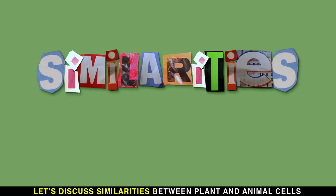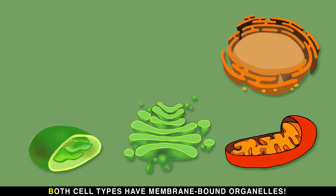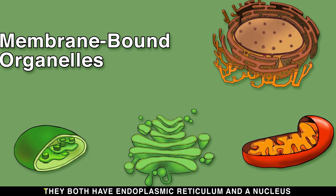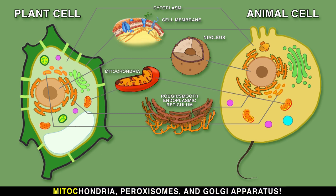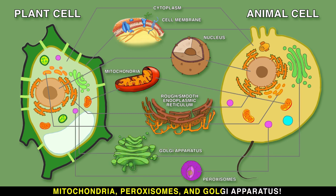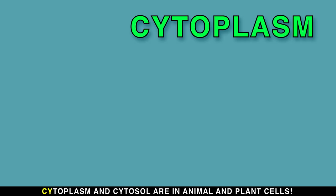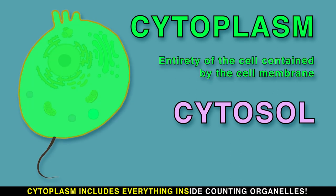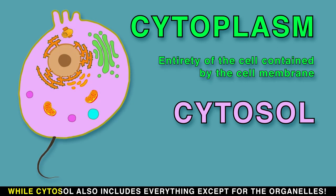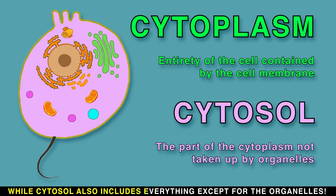Let's discuss similarities between plant and animal cells, starting with the fact that both cell types have membrane-bound organelles. They both have endoplasmic reticulum and a nucleus, mitochondria, peroxisomes, and Golgi apparatus. Cytoplasm and cytosol are in animal and plant cells. Cytoplasm includes everything inside counting organelles, while cytosol includes everything except for the organelles.